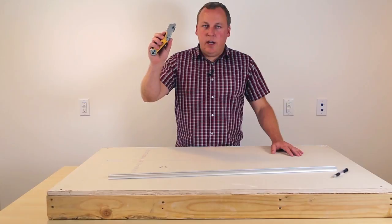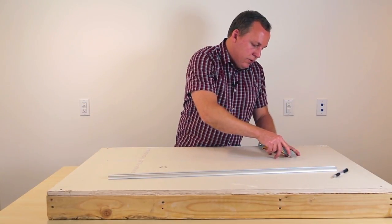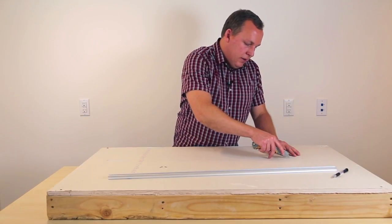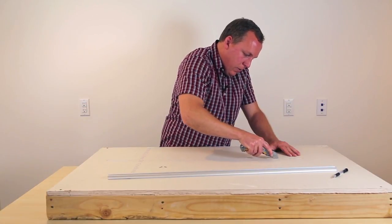So I have my utility knife here. I recommend going over your lines lightly to ensure accuracy. Then you can go ahead and make some stronger passes to get all the way through your drywall.